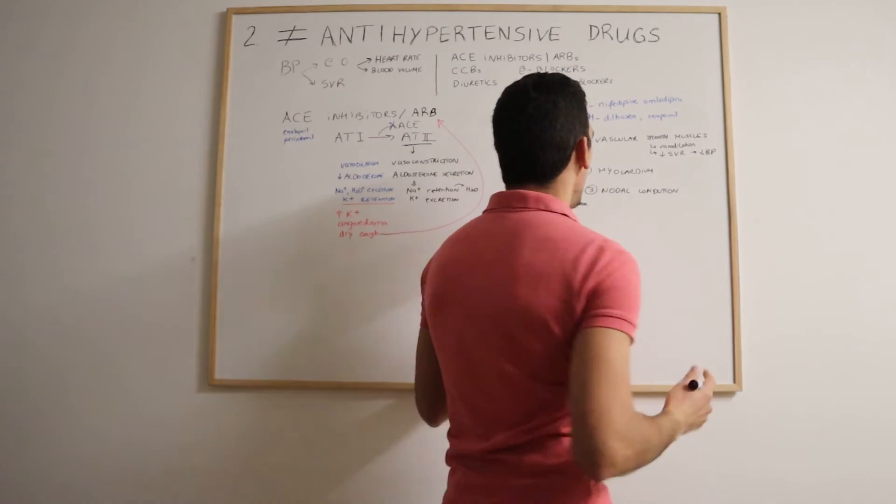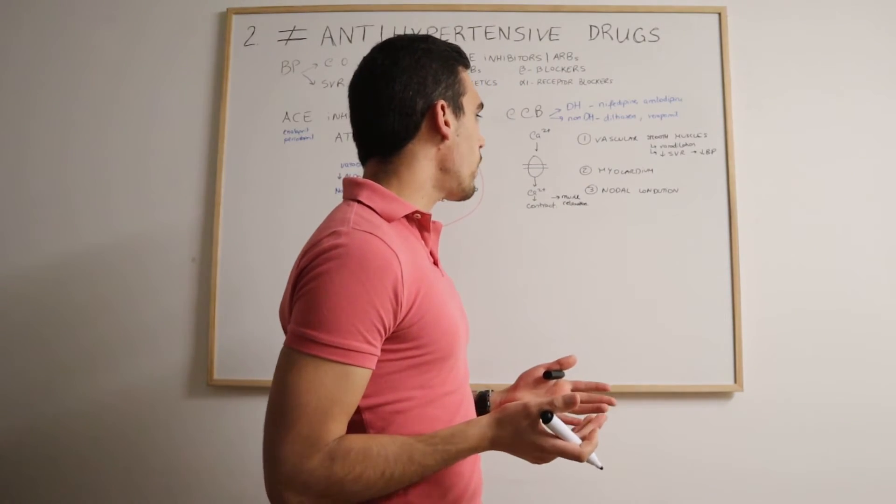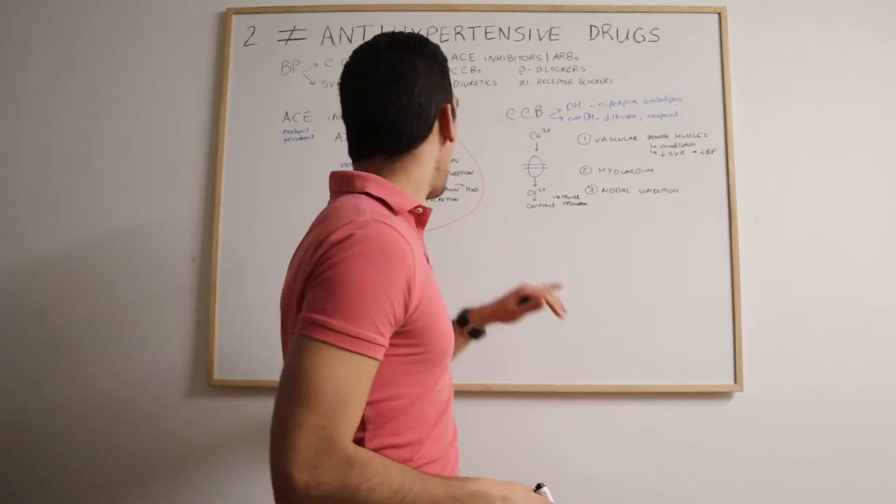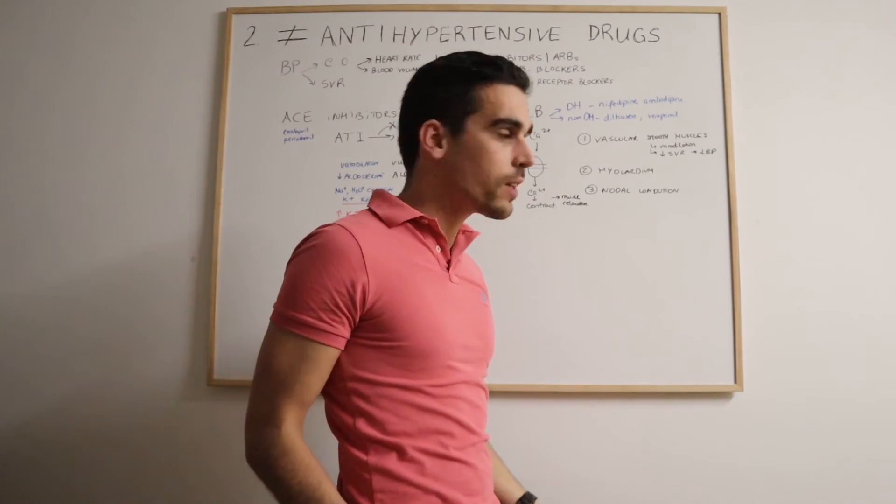Basically, the diltiazem, it acts more on the coronary vasculature, so it decreases the heart rate. And if the heart rate is decreased, then we have the blood pressure decreased as well.